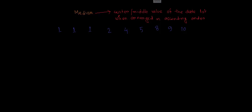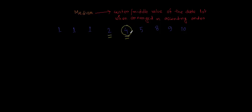Now let's find which one is the center value — on either side of the center value there will be an equal number of data. If we consider 2, there are 3 data on one side and 5 on the other, so 2 is not the center. If we consider 4, there are 4 data on each side, so 4 is the center value. Therefore the median is 4.